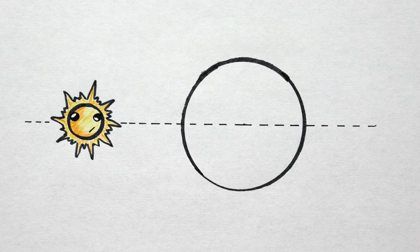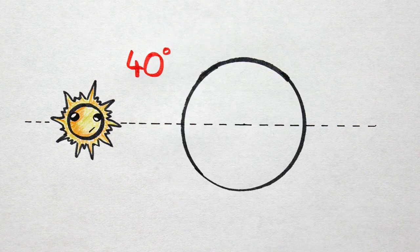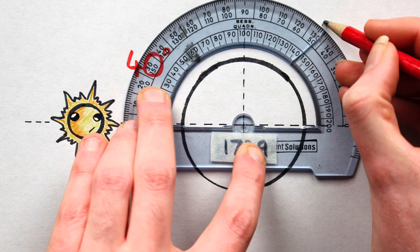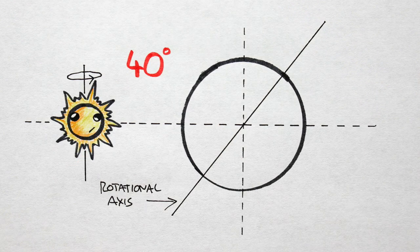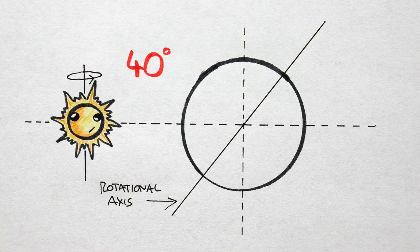Let's give this guy an axial tilt of 40 degrees, say. Meaning we mark off 40 degrees from the line perpendicular to the orbital plane, like so. This is the planet's rotational axis. Let's say our star spins counterclockwise. So our planet will also spin counterclockwise.